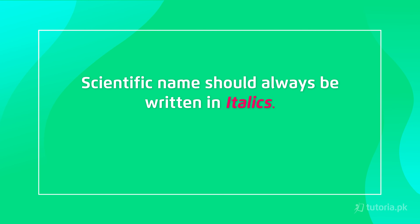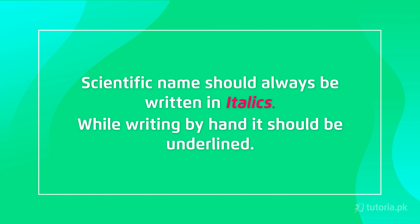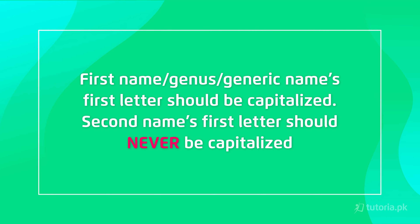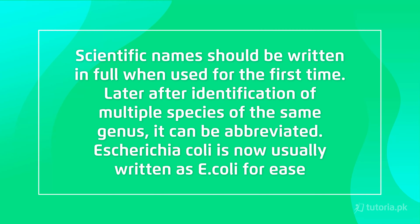Scientific names are always written in italics. And if you are writing by hand, then they are underlined. The first letter of the genus name is always capitalized, and the first letter of the second name, the species name, should never be capitalized — it should always be lowercase. When the scientific name is used for the first time it is written in full, but over time, when the genus of many species can be identified, it can be abbreviated. For example, Escherichia coli is now written as E. coli.